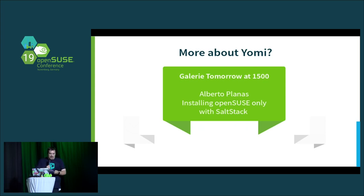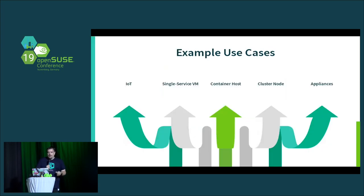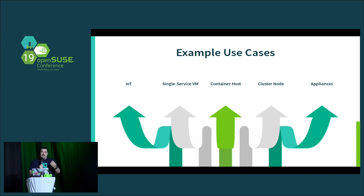With all of that put together, the question becomes: what are you going to use MicroOS for? It's not just a container operating system now. The obvious use cases include containers — where we started — but anything hosting a single service is a perfect use case. Things like single-service VMs, cluster nodes, hardware appliances, Raspberry Pis, IoT.